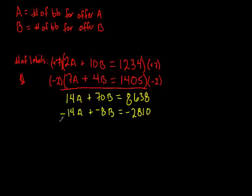So if I now use the elimination method and add the two equations together, look what happens. 14A plus negative 14A is 0. 70B plus negative 8B is a positive 62B. And adding these two numbers together gives me 5,828.